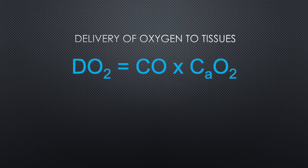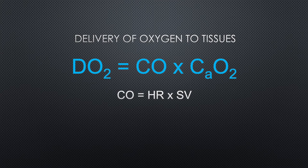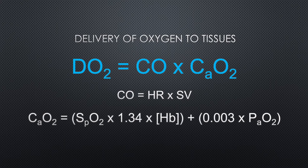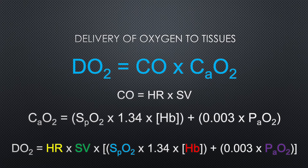Delivery of oxygen is equal to the product of cardiac output multiplied by the oxygen content of arterial blood. Cardiac output equals heart rate multiplied by stroke volume. The oxygen content of arterial blood equals the saturation of blood multiplied by hemoglobin multiplied by a factor of 1.34, added to the product of the partial pressure of oxygen in the arteries multiplied by 0.003. Put another way, the oxygen content equals dissolved oxygen plus hemoglobin-bound oxygen. The key factors impacting oxygen delivery are patient saturation, hemoglobin, and partial arterial oxygen pressure.